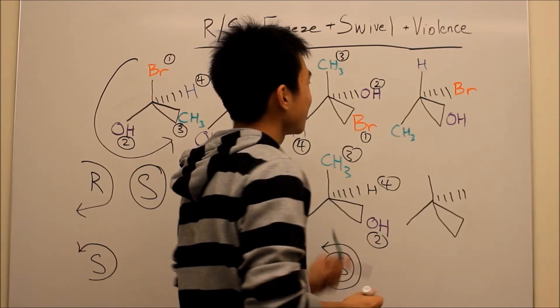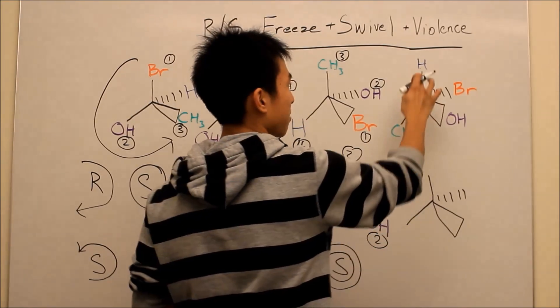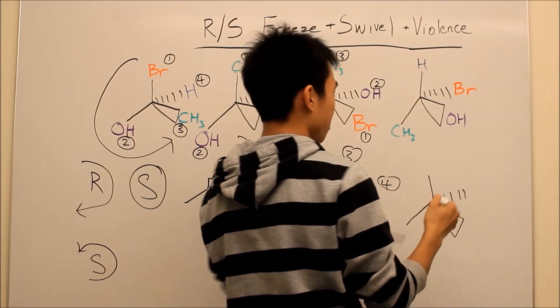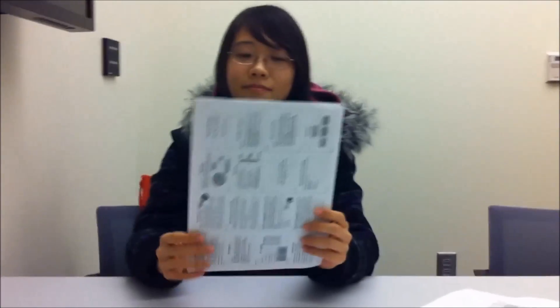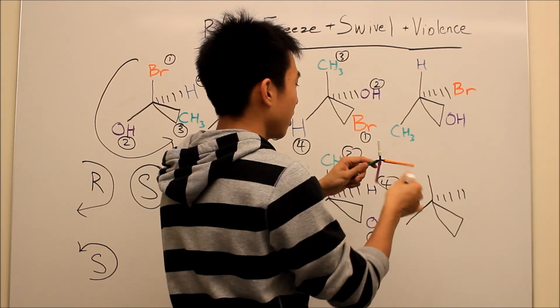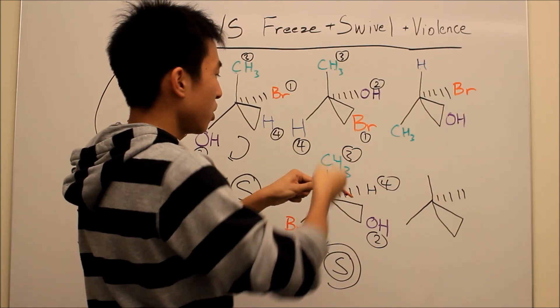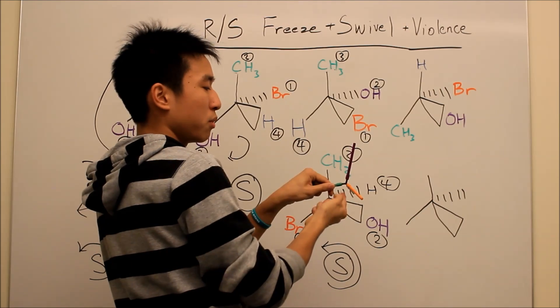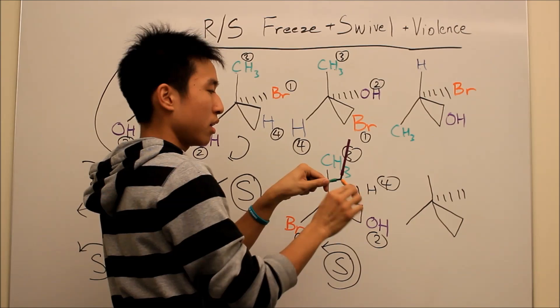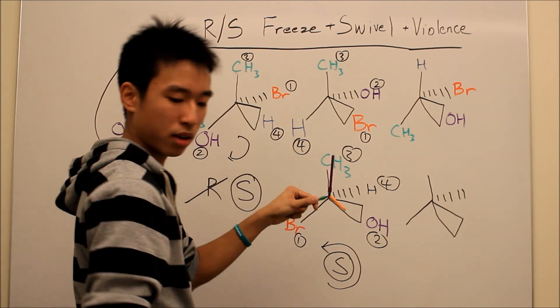And the next one — this one you solve with violence. You can take out all your rage on hydrogen. Because our goal right now is to get him in the back, you literally just punch the hydrogen in the face. Professional hydrogen puncher here — if you see hydrogen on top, punch it in the face. When you punch the hydrogen, he's going to fall to the back. Then whatever was in the front comes to the top, and whatever was in the back is now in the front.